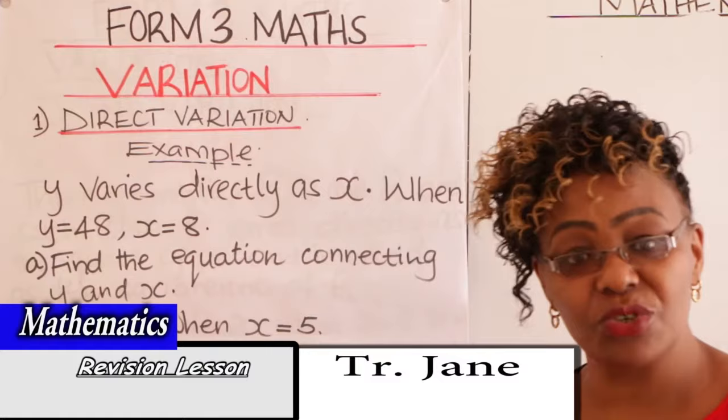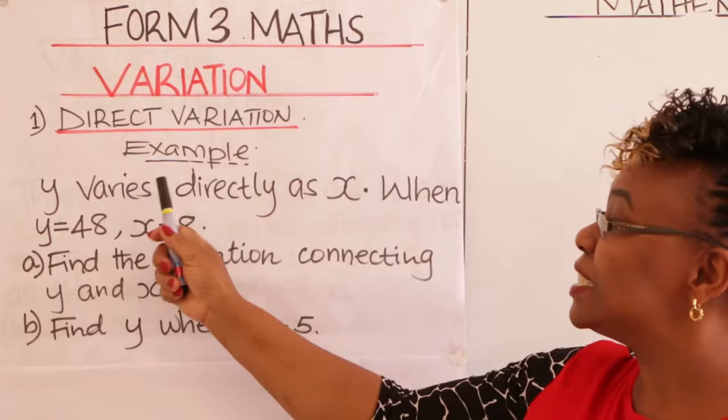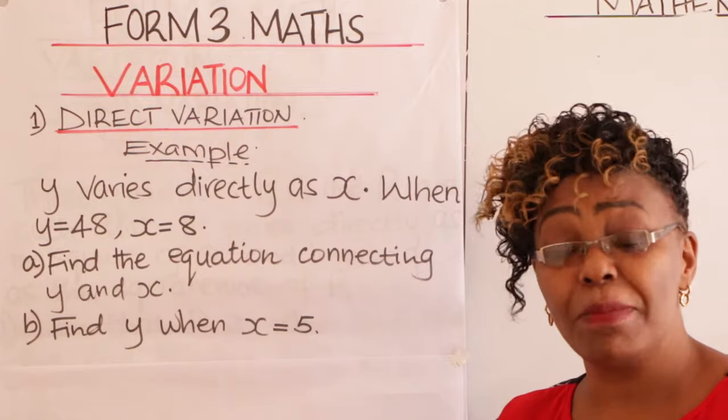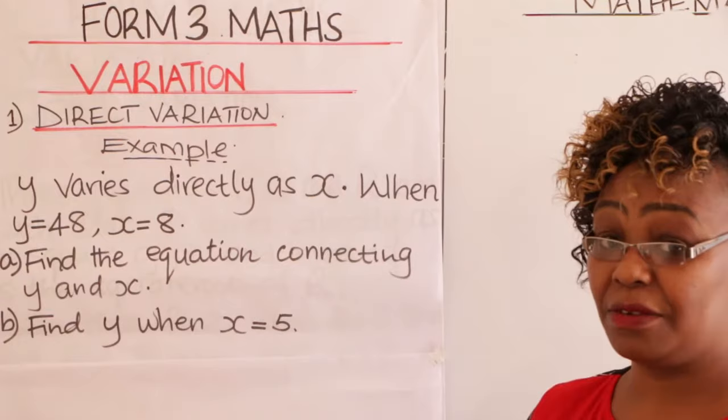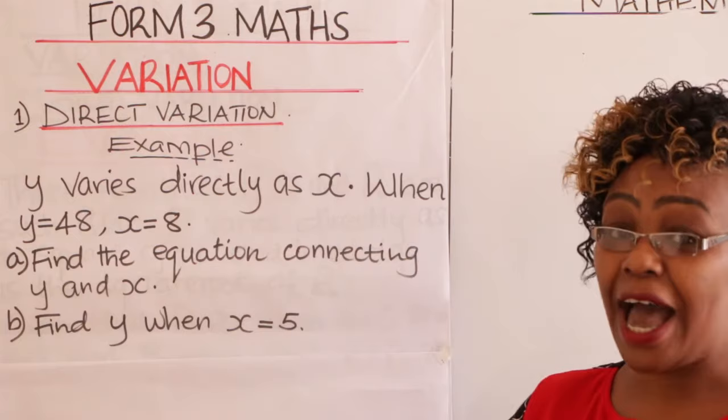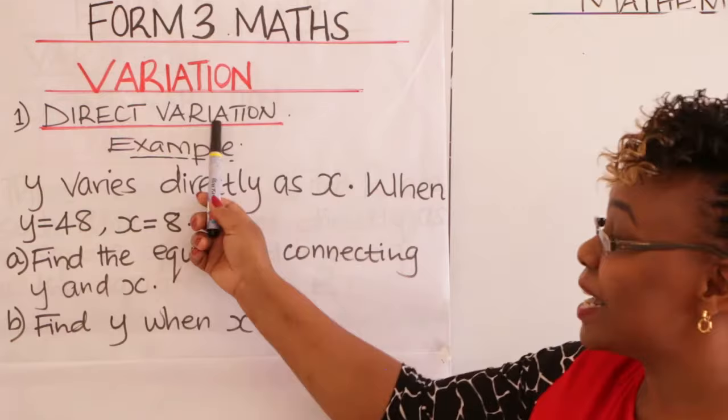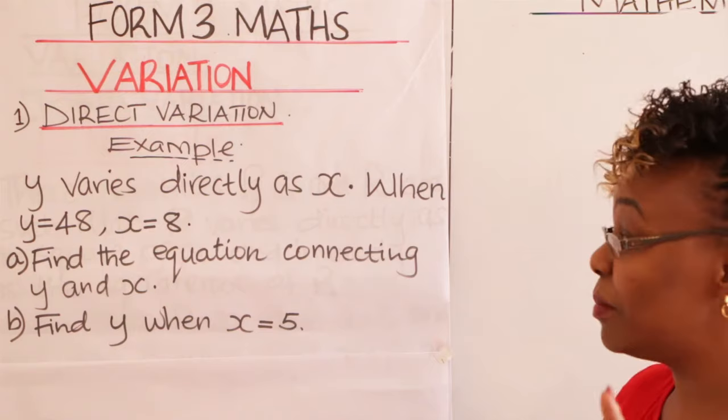Let us look at what we call direct variation. Learner, when we say that two quantities vary directly, what do we mean by that? We mean that when one quantity increases, the other one also increases — both of them increase at the same rate. Or when one quantity decreases, the other one also decreases at the same rate. That is what we call direct variation.